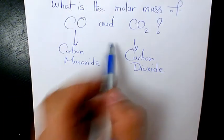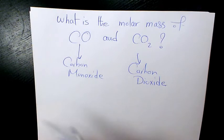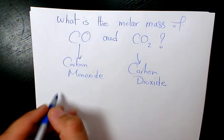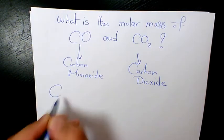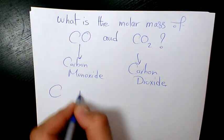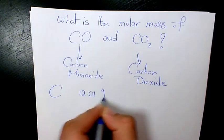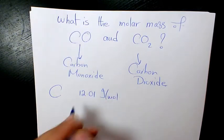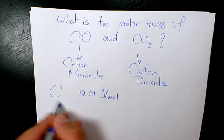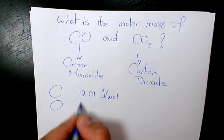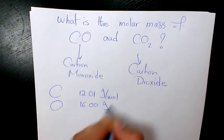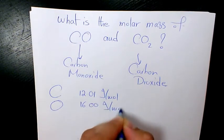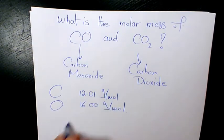For finding molar mass we always need to find out the atomic mass first using the periodic table. Carbon is 12.01 grams per mole — don't forget the units — and oxygen is 16.00 grams per mole.